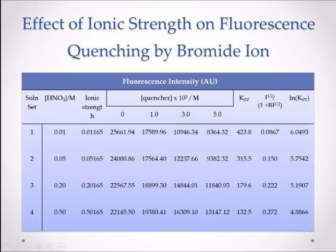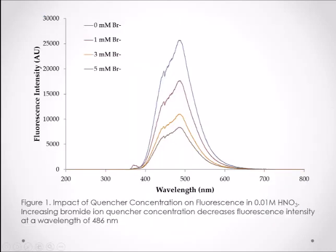Here are the results of our measurements describing the effects of ionic strength and quencher concentration on fluorescence intensity, and our calculations of the resulting kinetic quenching rate constants. As ionic strength increased, the Stern-Volmer rate constant decreased. As ionic strength increased, fluorescence intensity increased as well. As quencher concentration increased, fluorescence intensity decreased.